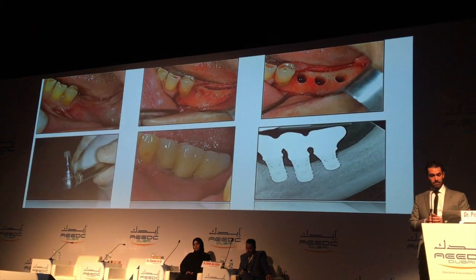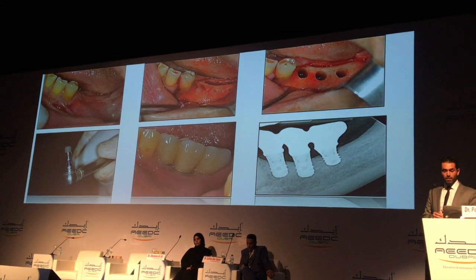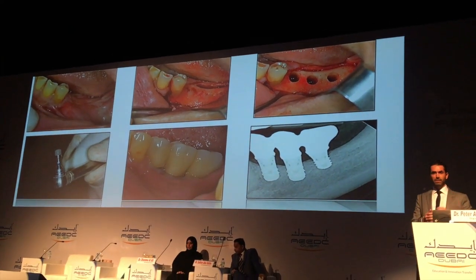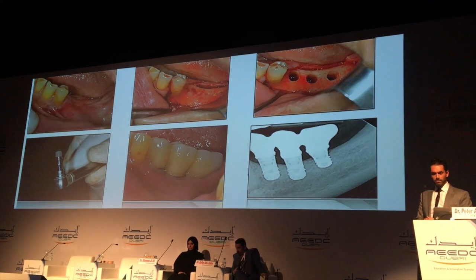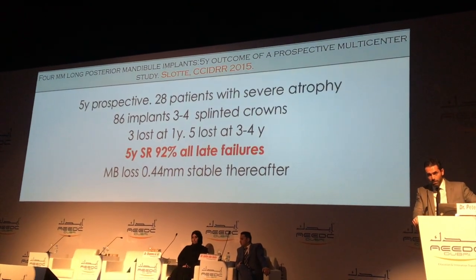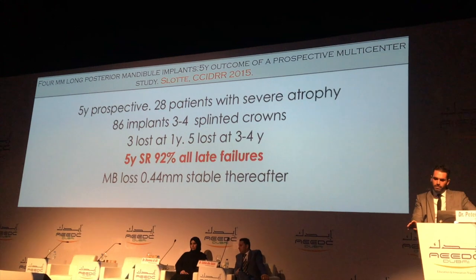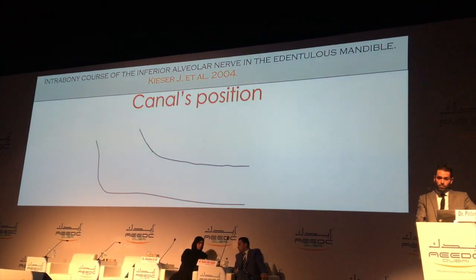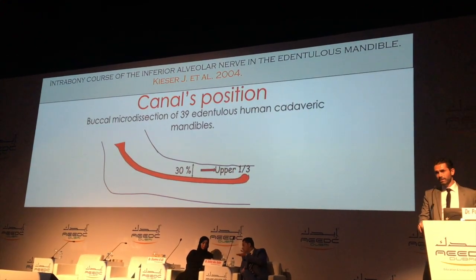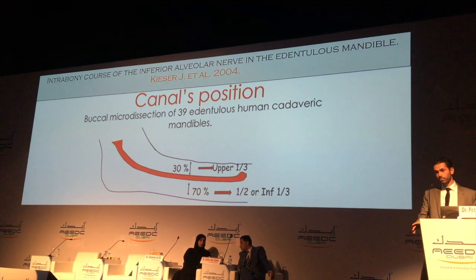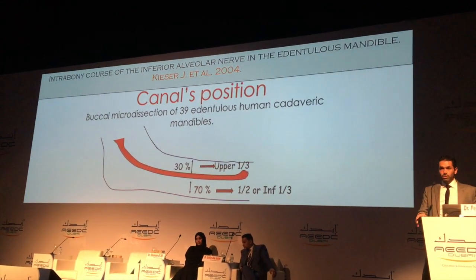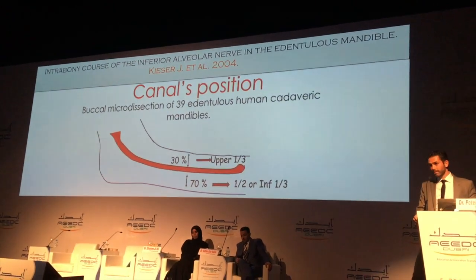In more extreme cases with very limited height above the mandibular nerve, we used a 4mm Straumann implant splinted to slightly longer 6mm implants, with a great two-year follow-up. The literature on this 4mm implant also confirms it's a viable option, insisting on splinting. We know that canal position in the mandible — from a 2004 cadaveric study — is in the upper third 30% of the time and in the lower third 70% of the time. So one in three cases, you're dealing with canals very close to the coronal part — making short implants a great option.